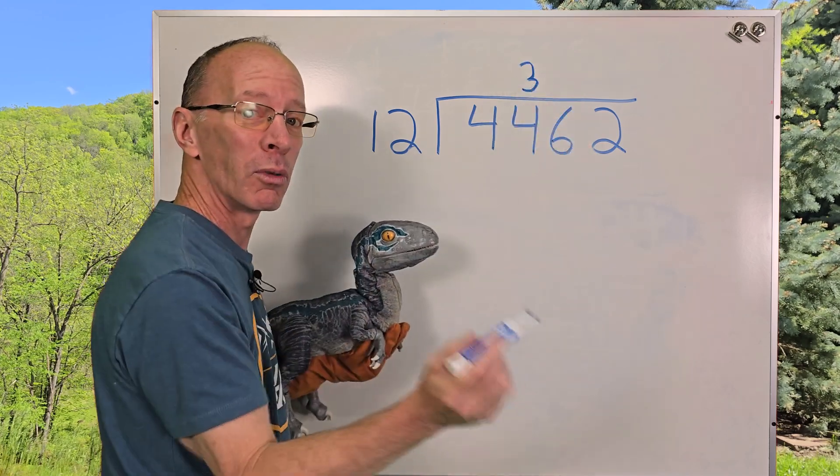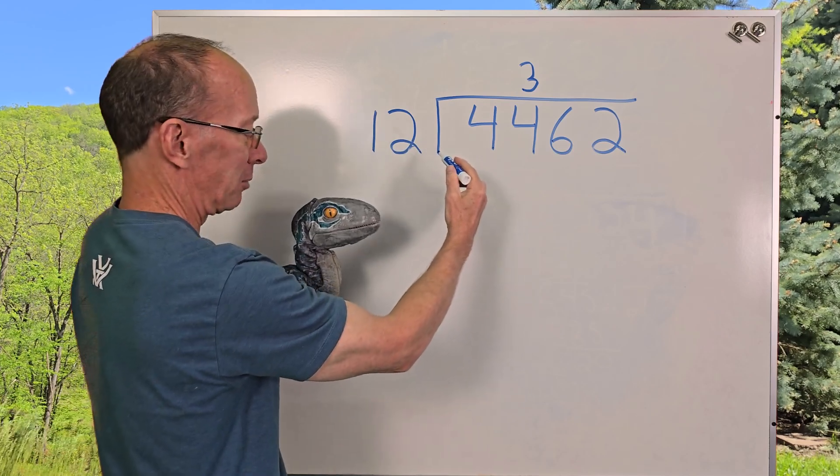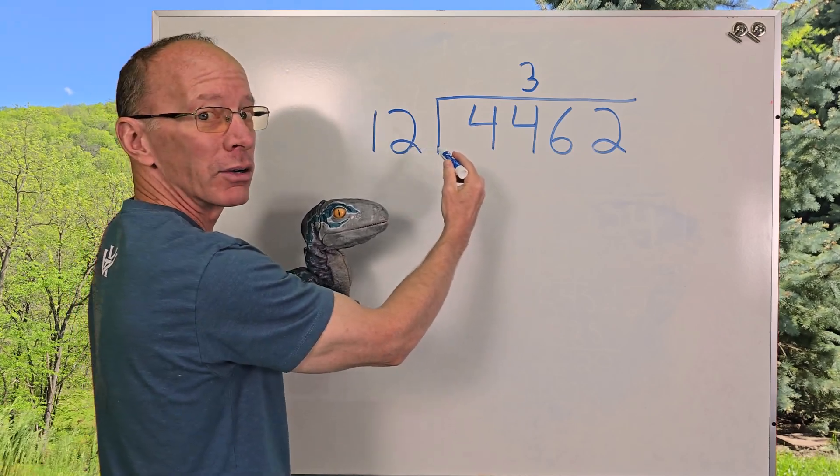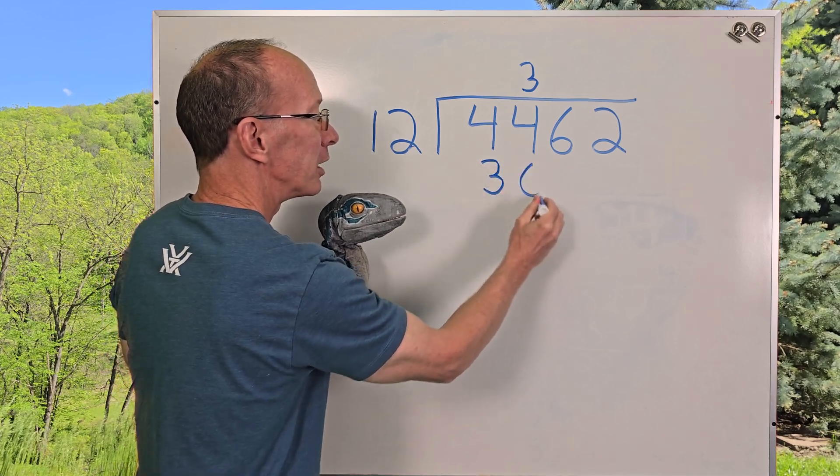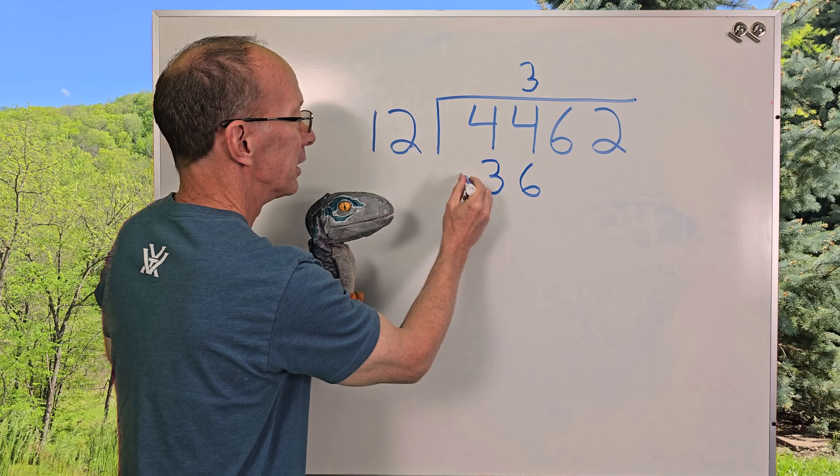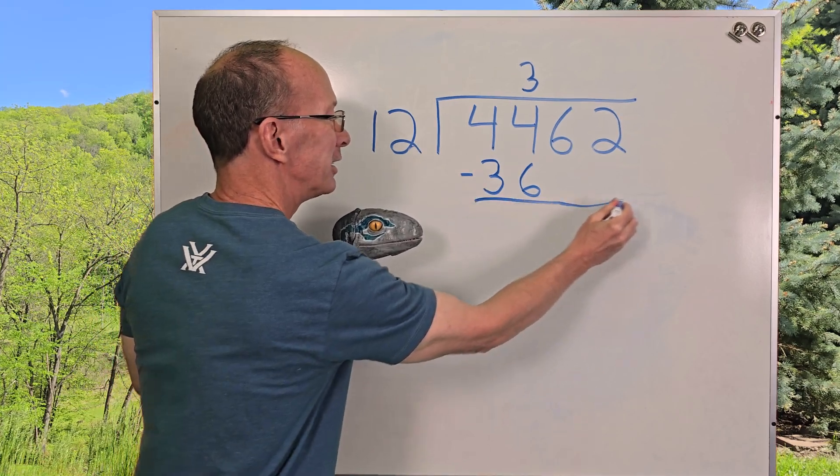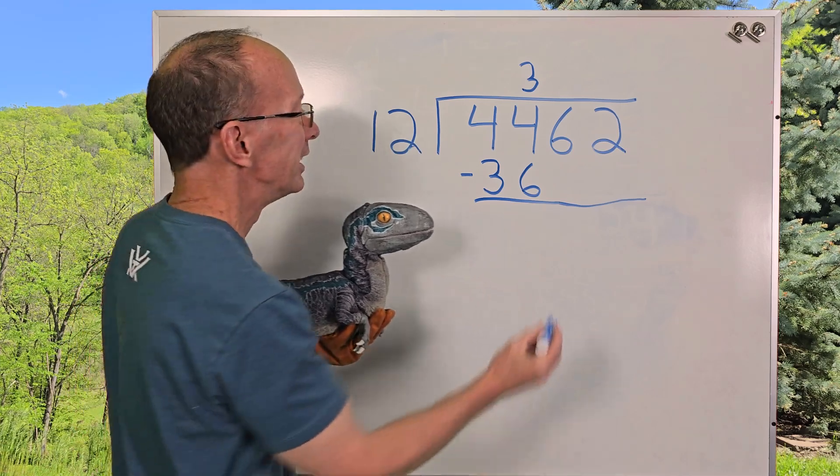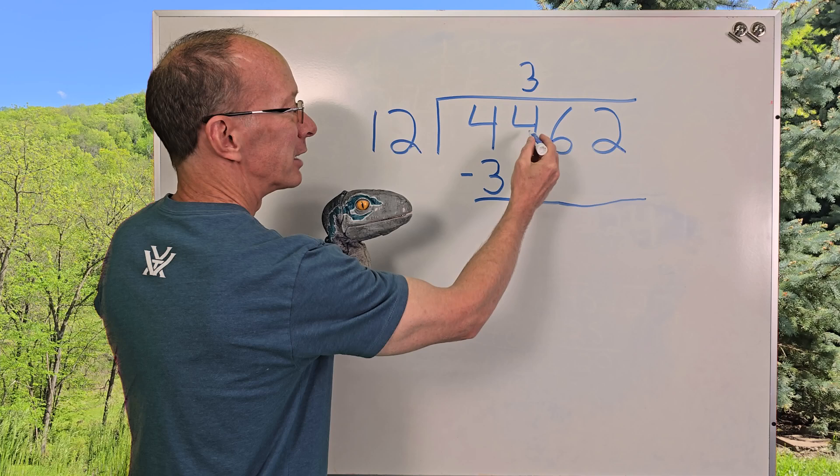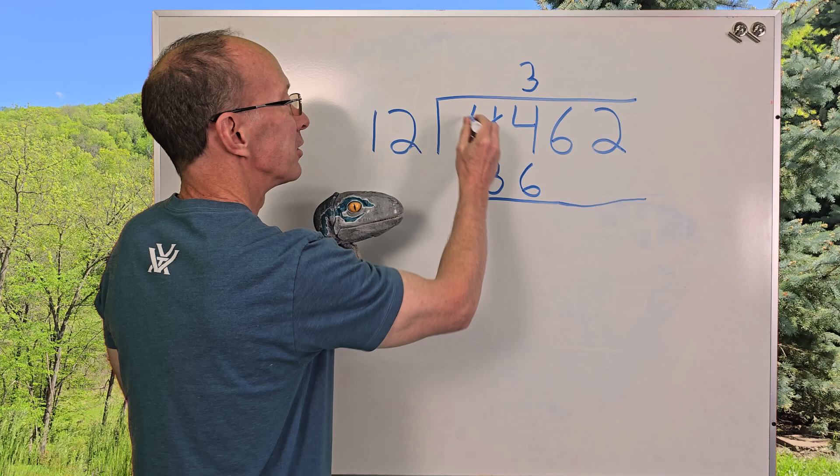And now I'm going to multiply. 3 times 12 equals, easy there buddy, easy. 12 times 3 equals 36. And now I'm going to subtract. It's always interesting on this show if you are dealing with a live raptor. So I need to borrow right here because I have 4 and I want to take 6 away from it. It can't do it. So I need to borrow from next door.